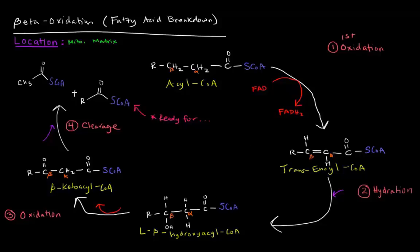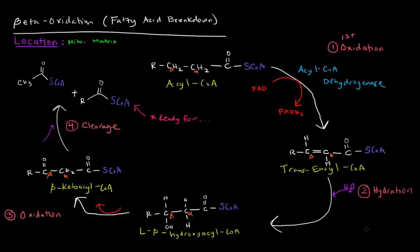Once we have this trans-enoyl-CoA, there's a hydration step. If you want to hydrate yourself, you drink some water — that's exactly what this step involves. In the hydration step, we're going to add water across this double bond. The OH is going to go onto the beta carbon and the H will go onto the alpha carbon. What we get is this L-beta-hydroxyacyl-CoA.